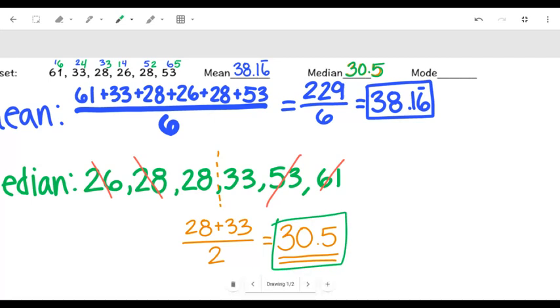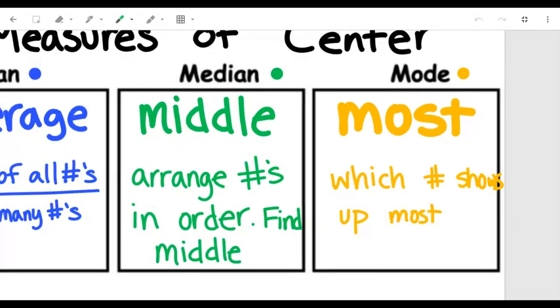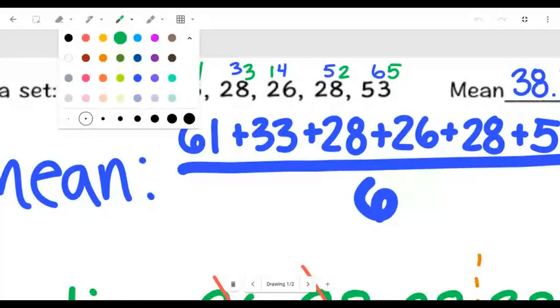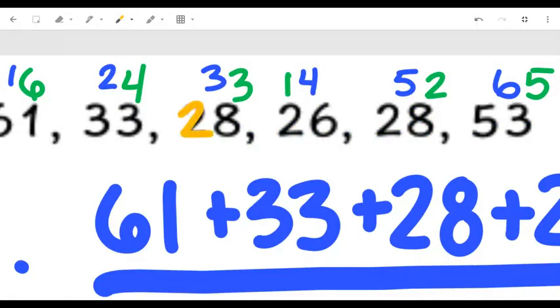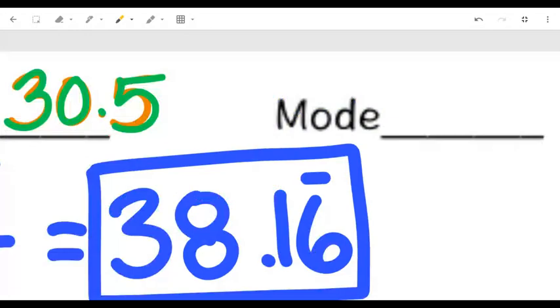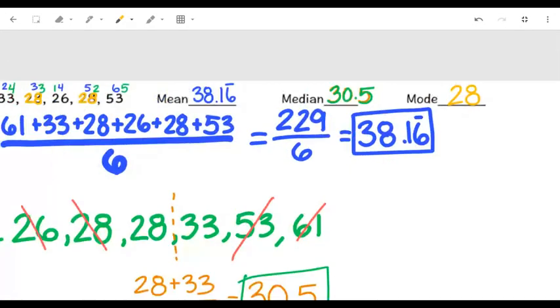And then last but not least, we need to find our mode, which if you'll remember, mode means most. Which number shows up the most? Well, this one, there's no work. All you have to do is look at those numbers and recognize that 28 shows up twice. If 28 shows up twice and nothing else shows up twice, our mode is simply 28. Mean, median, mode. Bing, bang, boom. That's how you solve it.